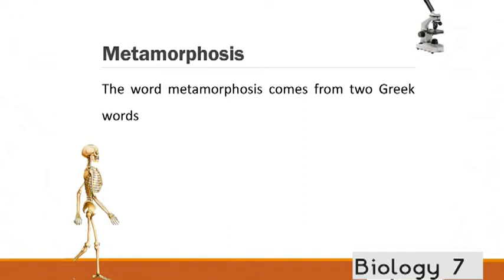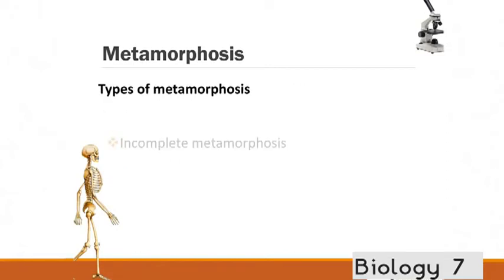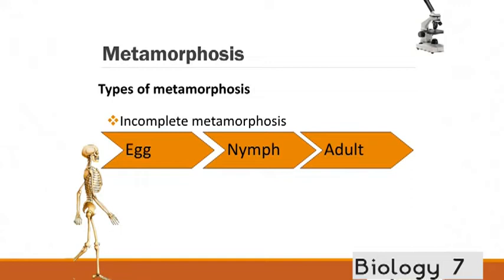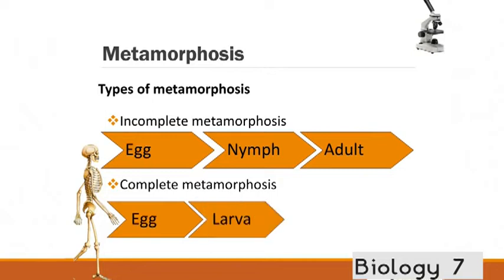So, metamorphosis comes from two Greek words. Meta means change. And morph means form. So, they change form. So, metamorphosis change form. There's two different types. There's the incomplete metamorphosis. And this is where you've got an egg. It creates a nymph and then an adult. Whereas, there's also a complete metamorphosis. Where you've got the egg, larval stage, then pupa, and then an adult.